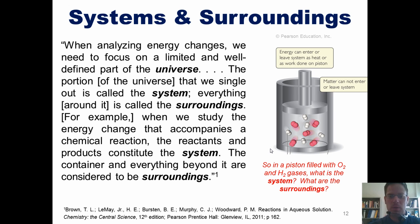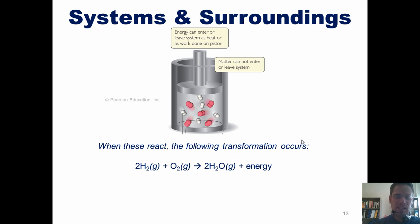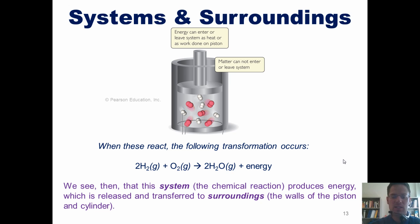Consider this example: a piston plunged into a cylinder housing a reaction between O2 and H2 gases. We can ask, what is the system and what are the surroundings? Anytime you have a chemical reaction, the substances comprising the reactants and products are the system; everything in the container around those substances as well as beyond that container are the surroundings. Here, the system is all the O2 and H2 gas molecules reacting and the products they form. The surroundings are the piston and cylinder and everything beyond them. When these two gases react, they form H2O gas and release energy, which is transferred into the surroundings — the walls of the piston and cylinder.